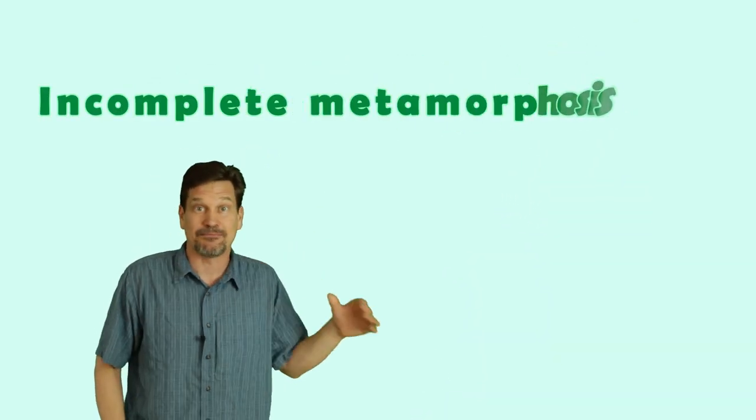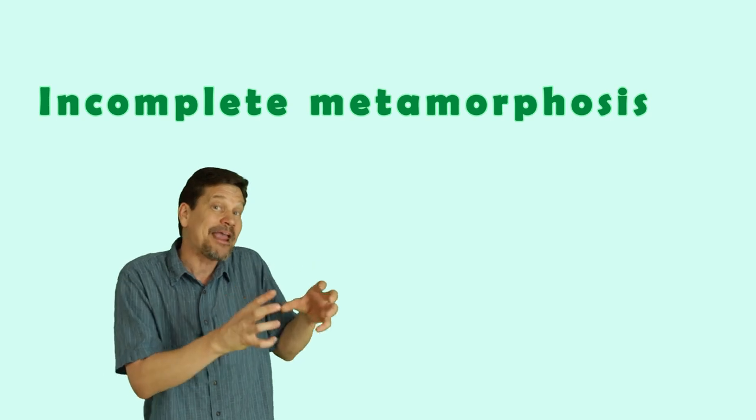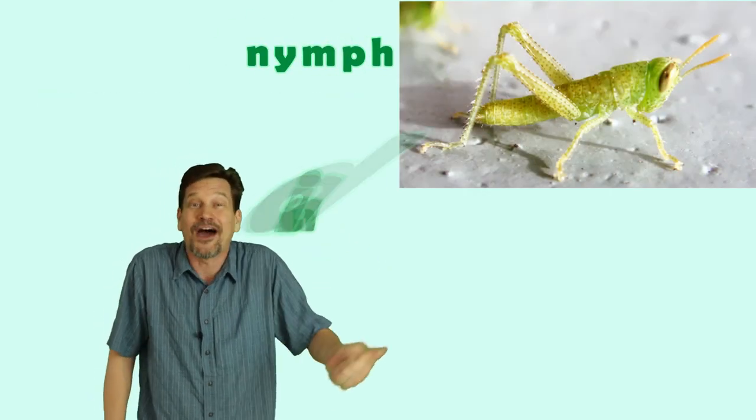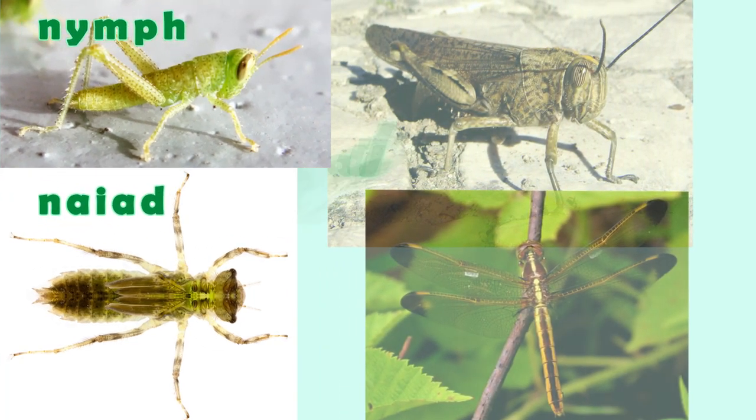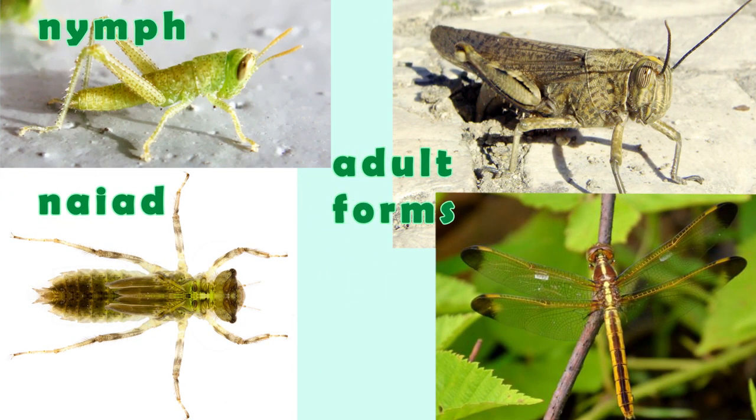In an incomplete metamorphosis you have a baby form called a nymph or if it lives in the water a naiad. The baby form looks like a teeny tiny little version of the grown-up form. The only thing that they're really going to do is grow a set of wings.